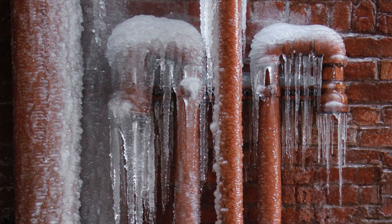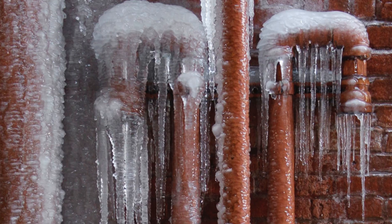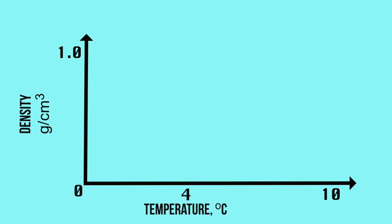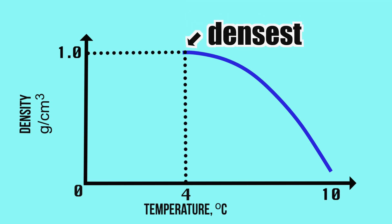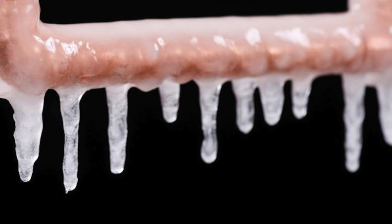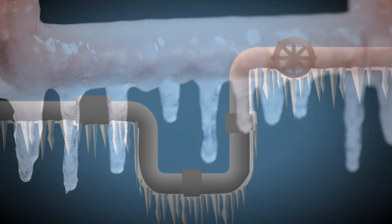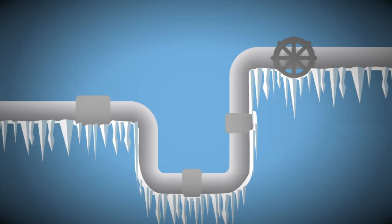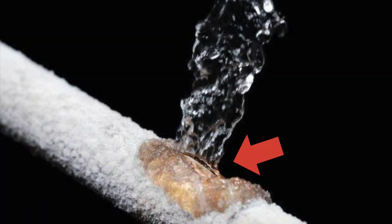Have you ever seen ruptured water pipes in the winter? This is due to the unusual characteristic of water. Water actually contracts or becomes denser with decreasing temperature when it is at a temperature greater than 4 degrees Celsius. Water is actually densest at 4 degrees Celsius. However, between 0 and 4 degrees Celsius, water actually expands as the temperature goes down. In the winter, as water freezes into ice, it expands towards the closed faucet, and eventually the pipe ruptures due to the high pressure between the ice and the pipe.